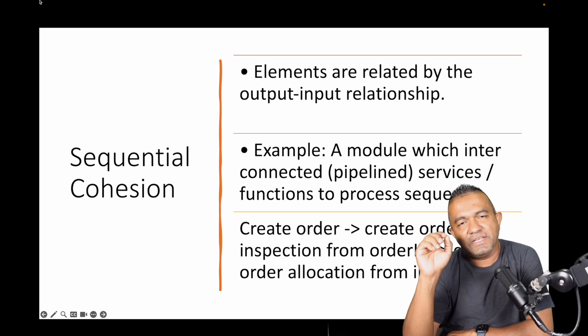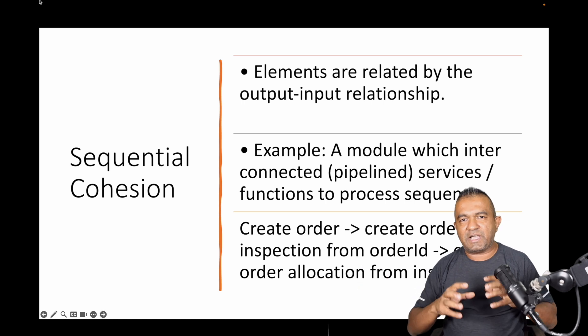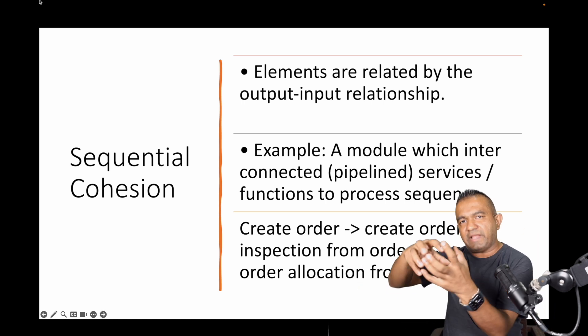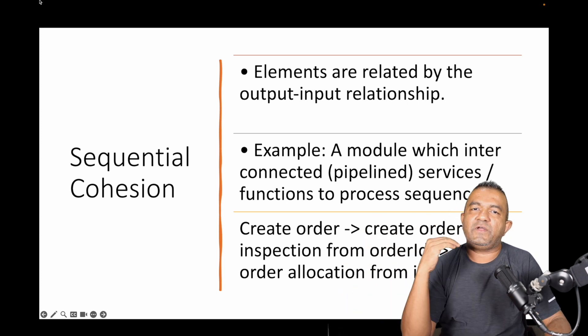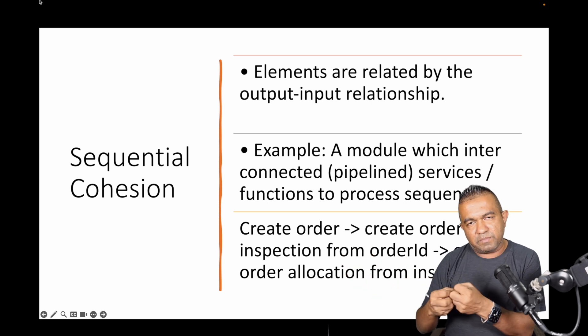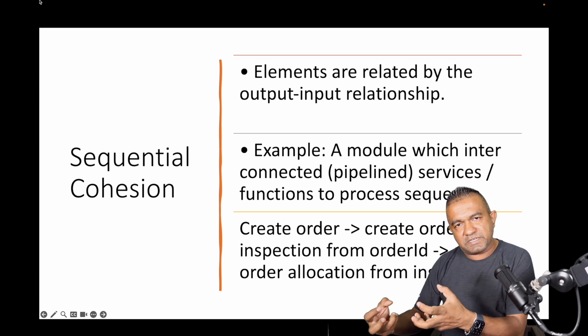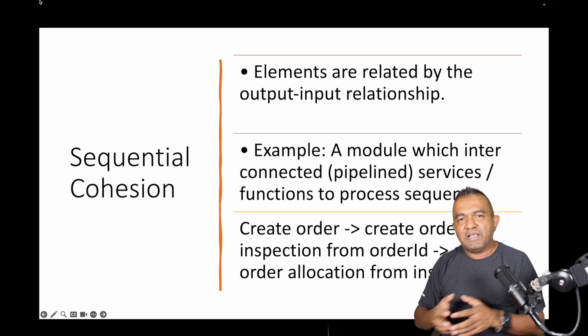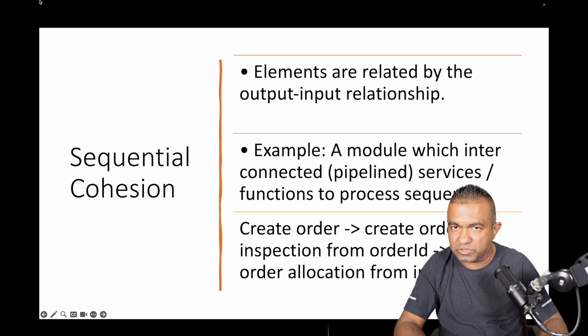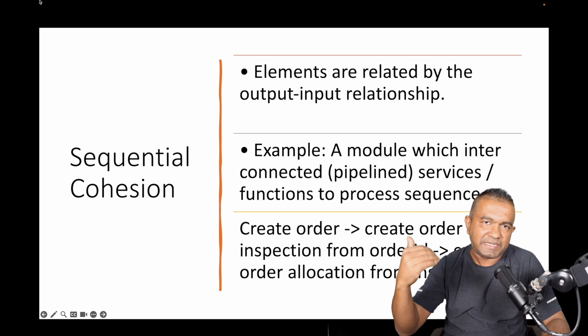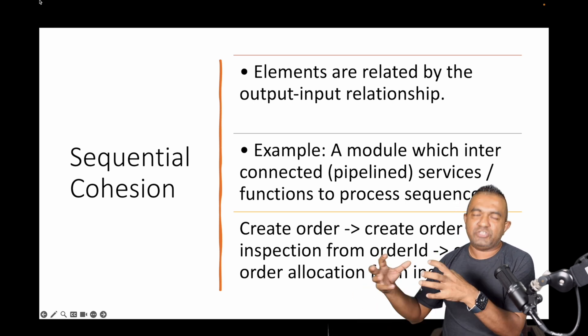Second one is sequential cohesion. Sequential cohesion is something connected with input and output. For example, you have one method that takes input, its output is input to a different method - it's like chaining one to another. Like you create an order, get the order number, create an inspection order, get the order inspection number, and create the allocation. That is called sequential cohesion and it's second in the list.